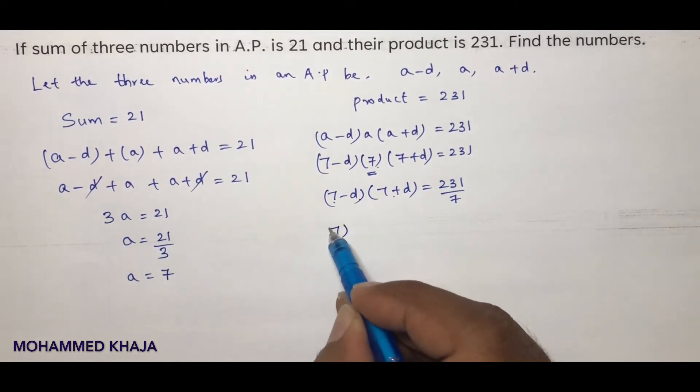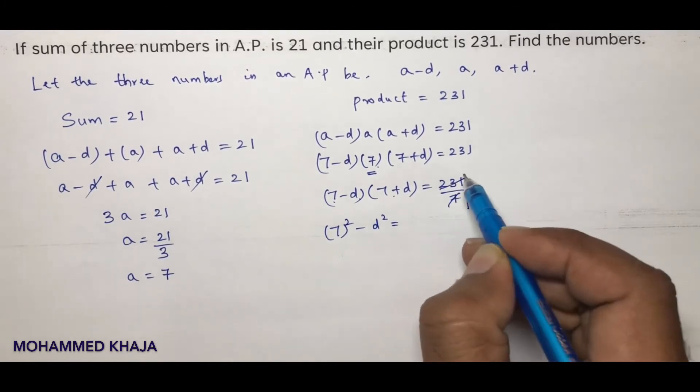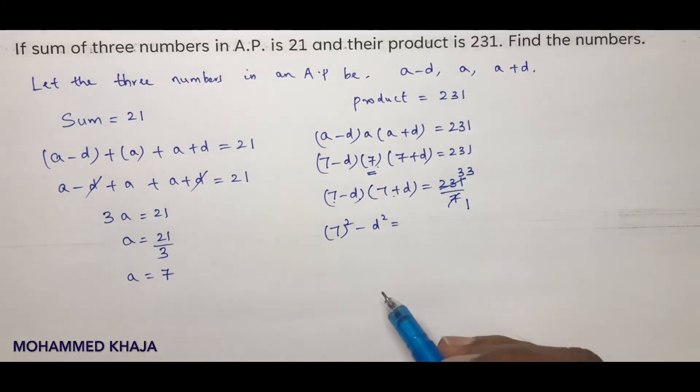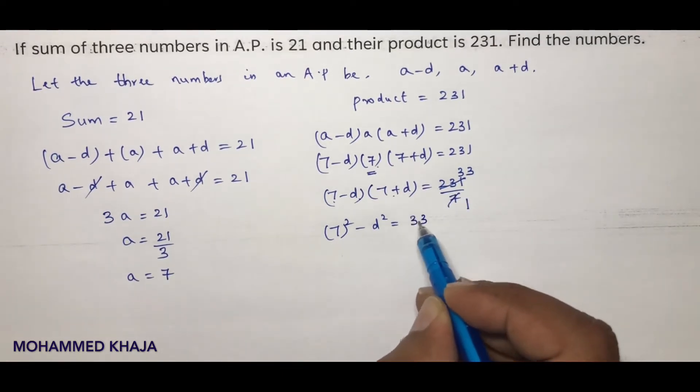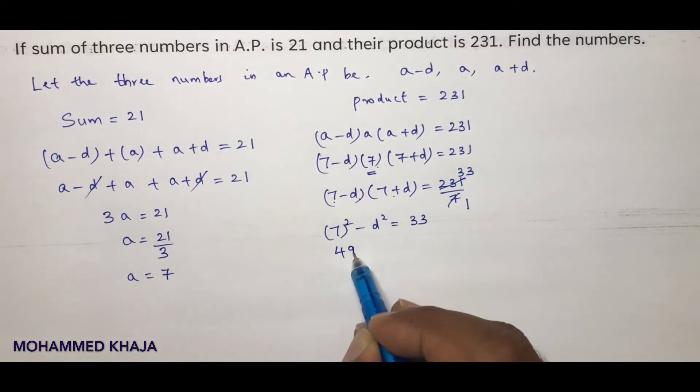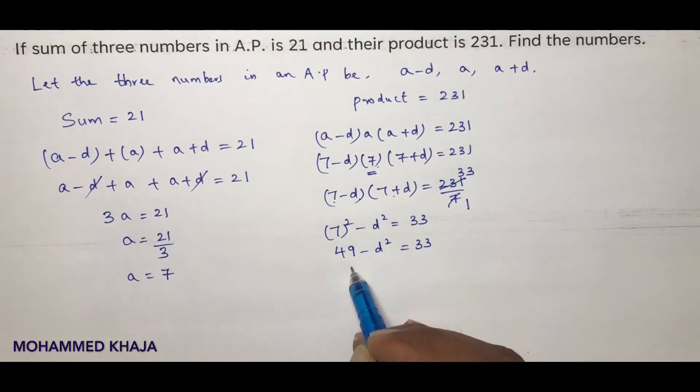A minus b into a plus b is a square minus b square. 231 by 7 is 33. So 7 square is 49 minus d square equals 33. D square equals 16. So d value is plus or minus 4.